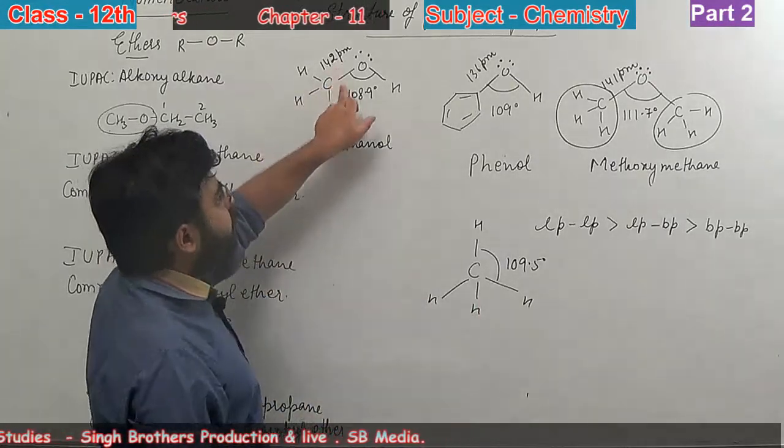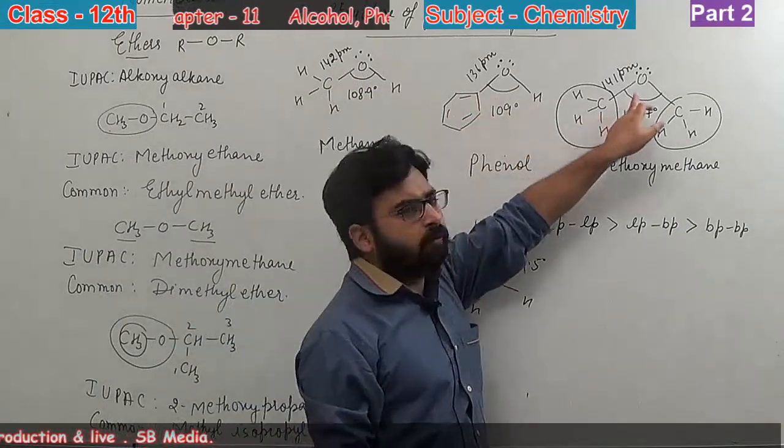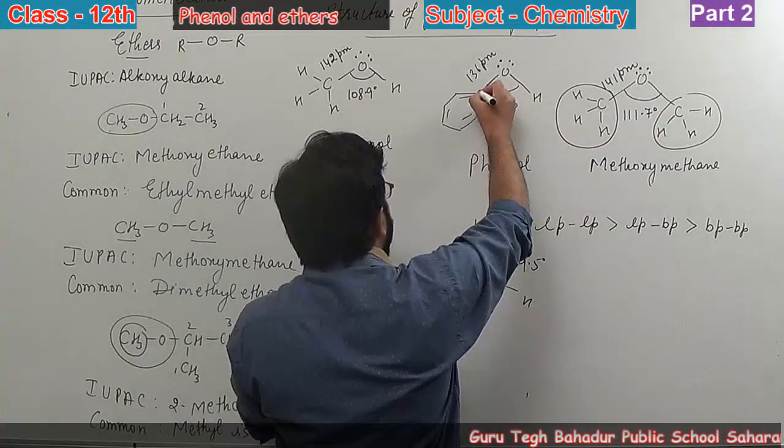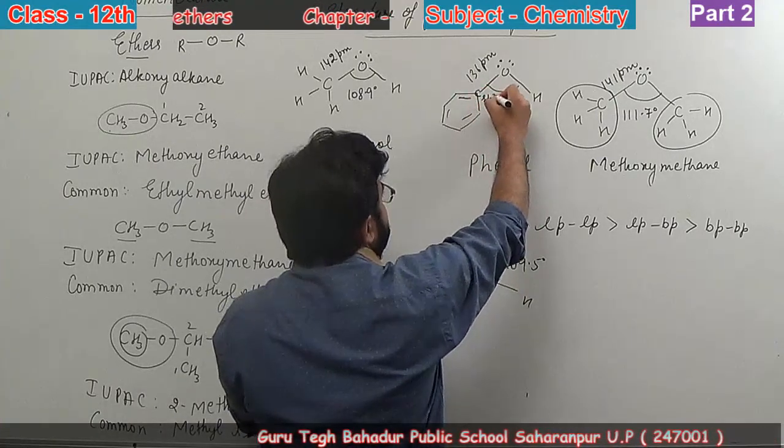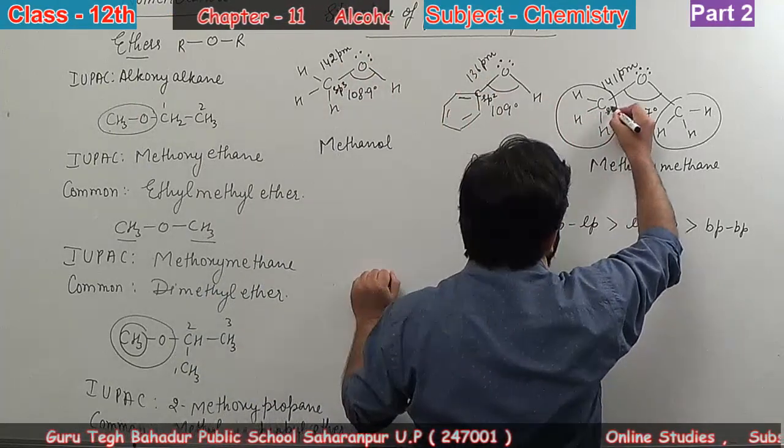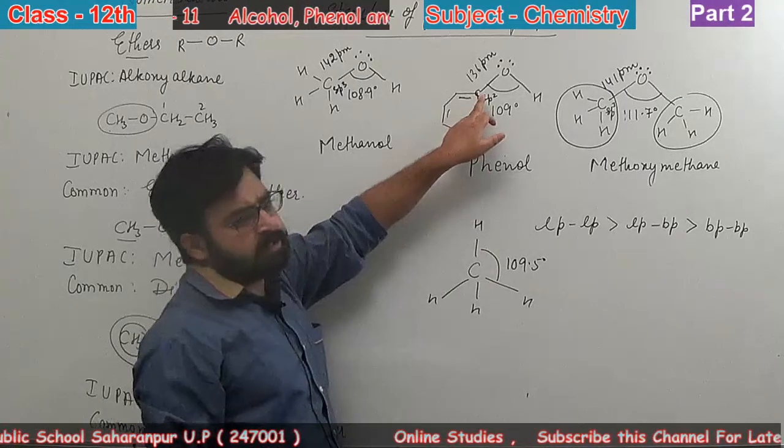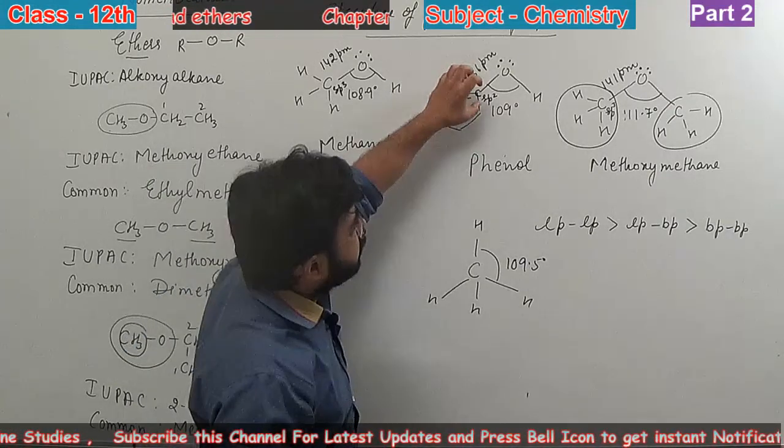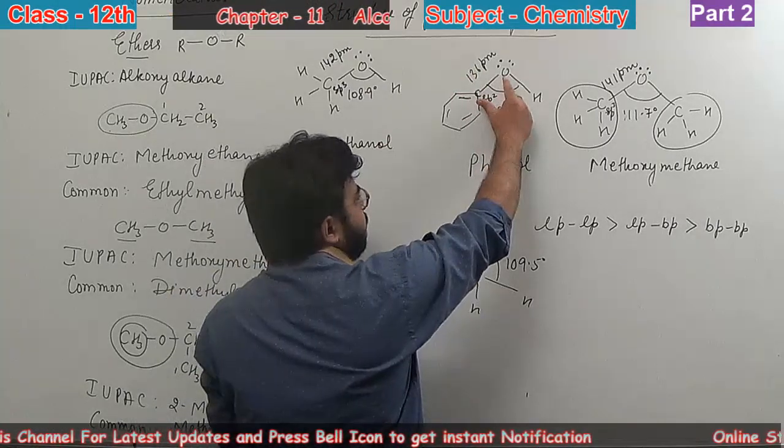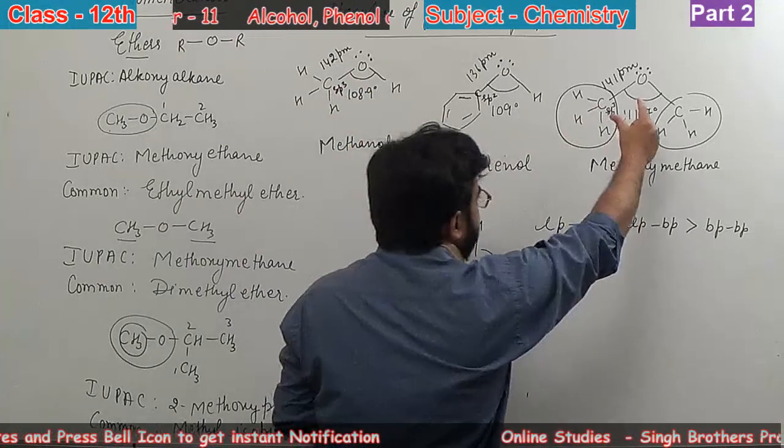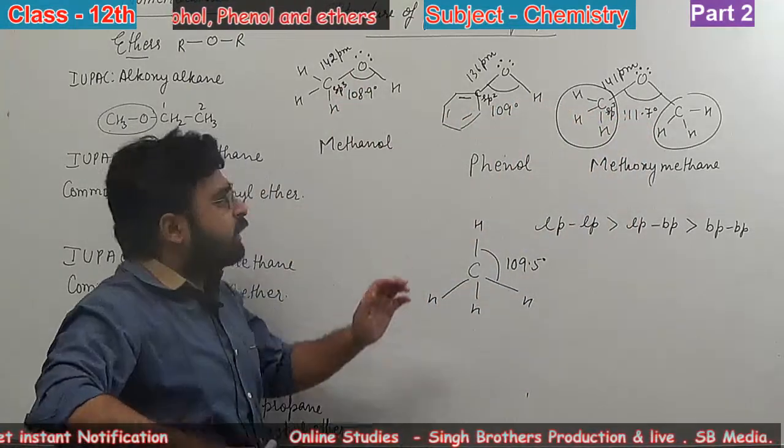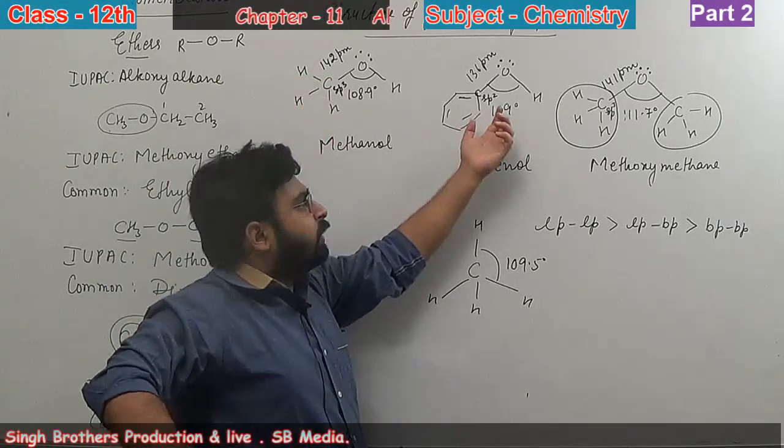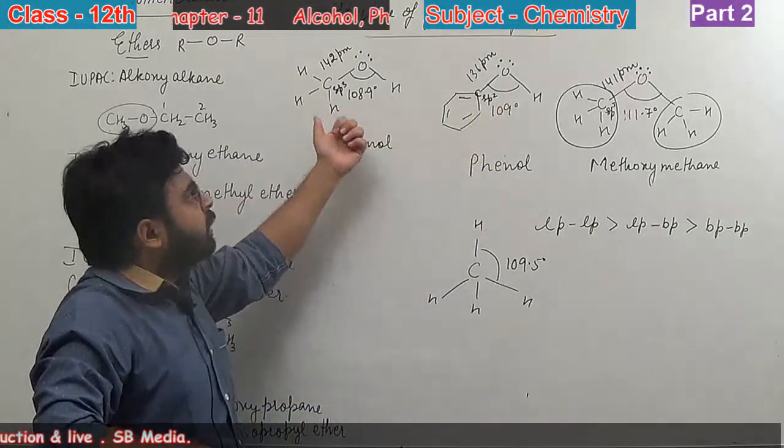Next is bond length. C-O bond length is 142 picometer in methanol, 136 picometer in phenol, 141 picometer in ether. Why does phenol have less bond length? Actually, in phenol the carbon is sp2 hybridized, while in alcohol and ether the carbon is sp3 hybridized. sp2 hybridized carbon has more s-character, making it more electronegative. It attracts the shared electrons towards itself, so this bond becomes smaller compared to sp3 hybridized bonds.